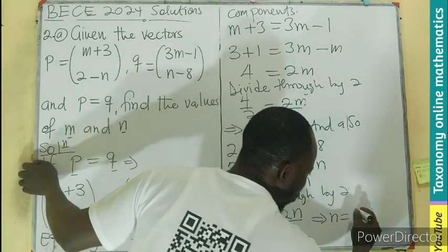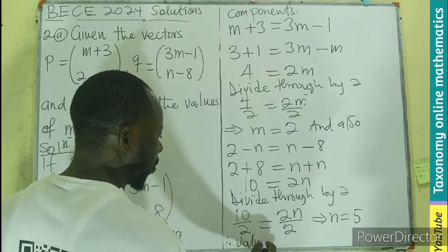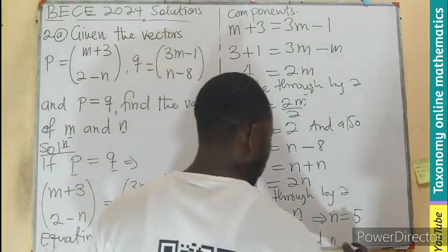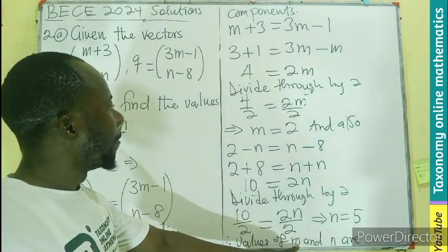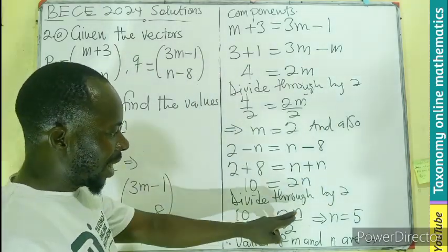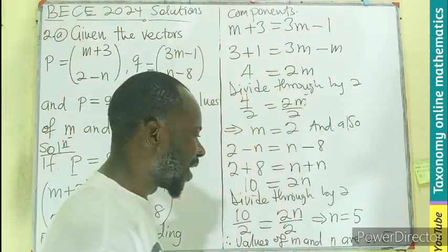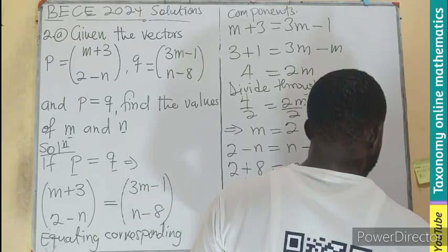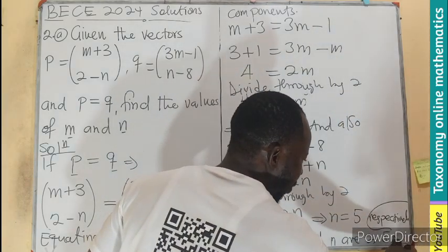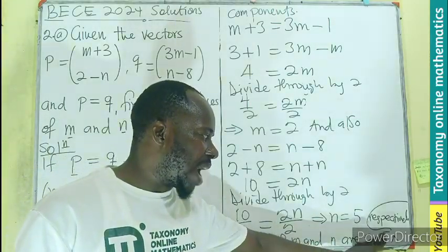So the values are, therefore, we are going to have M, which we had in the beginning to be 2. Then we have N to be 5, respectively. So I can see values of M and N are 2 and 5, respectively.